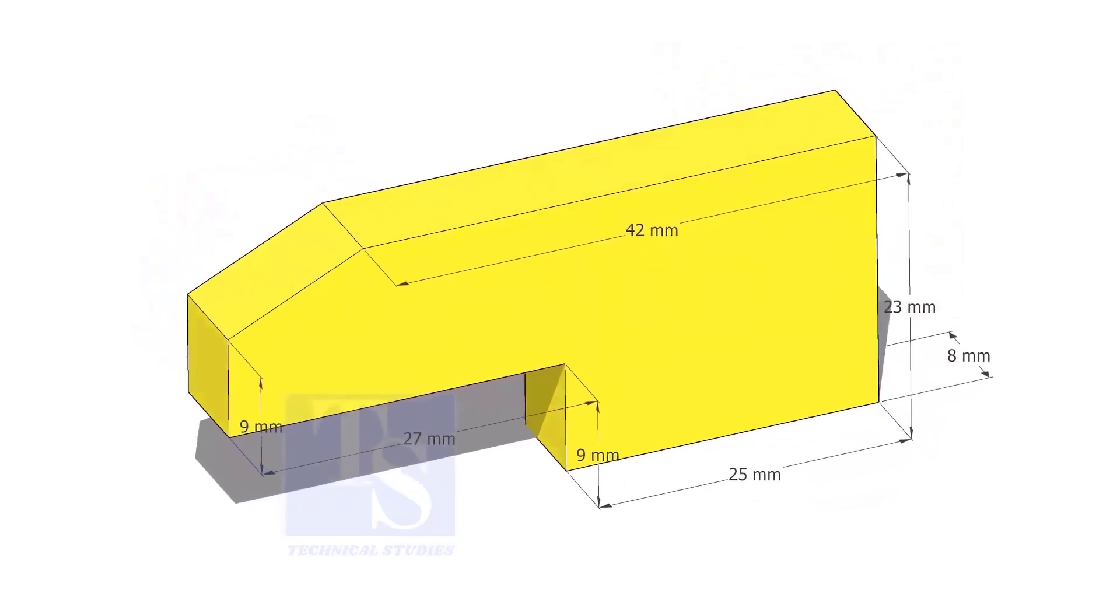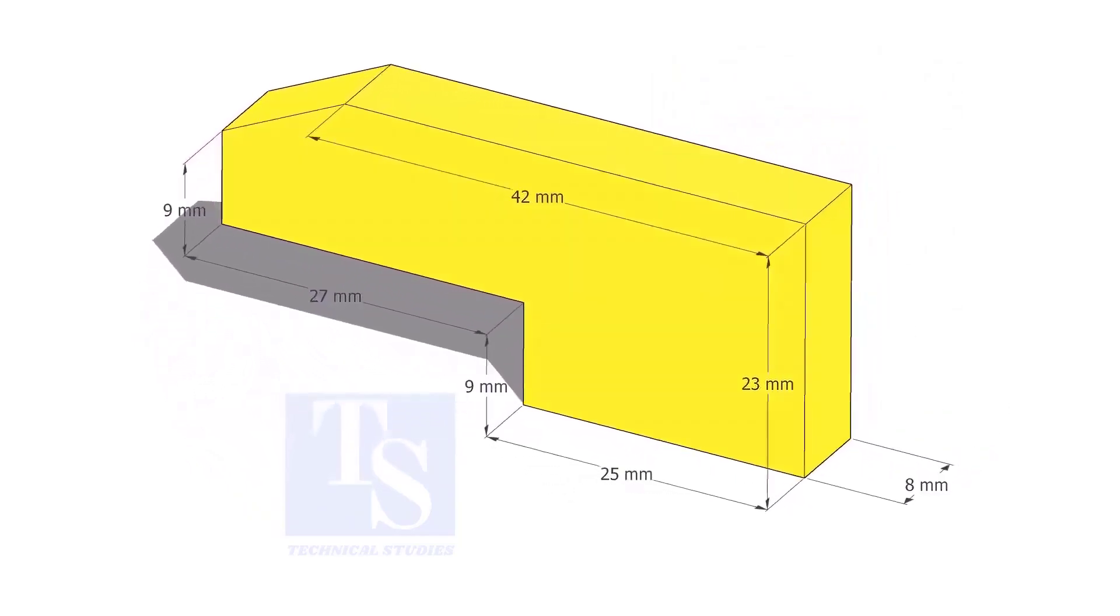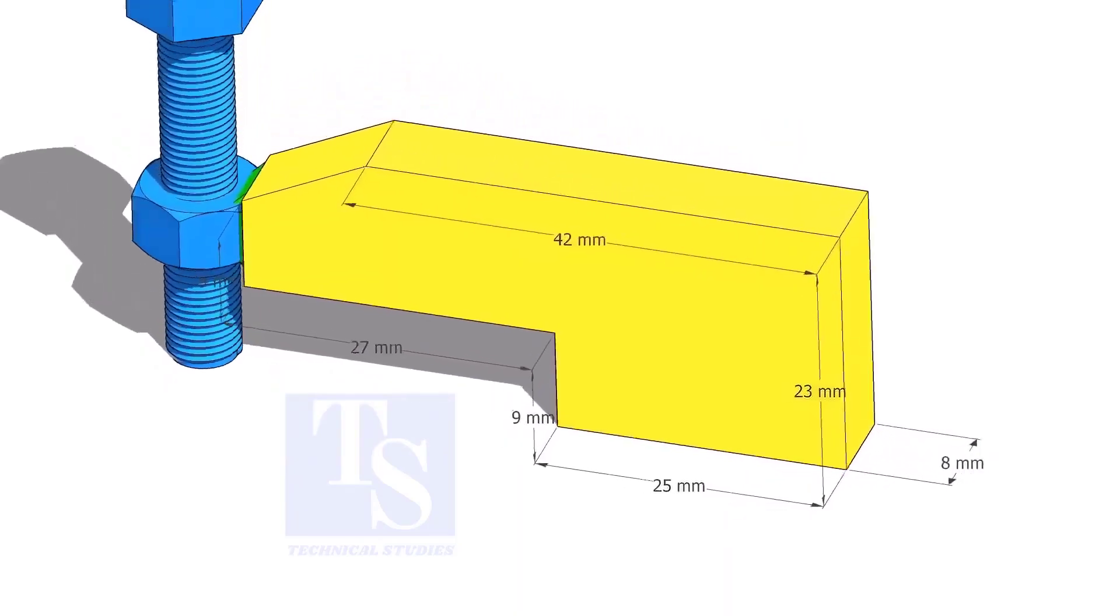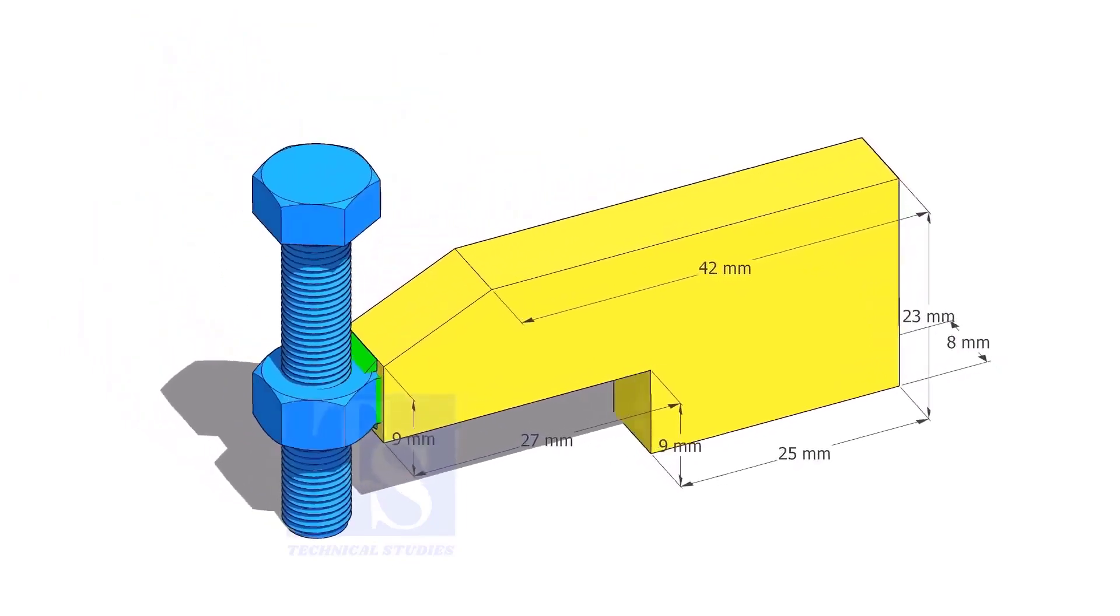Cut L shapes as per the given dimension. The link of this drawing is given in the description. Up to 4 inch pipes, you can use 10 mm thick plates. For 6 inch and above pipes, 12 mm to 16 mm thick plates are enough.